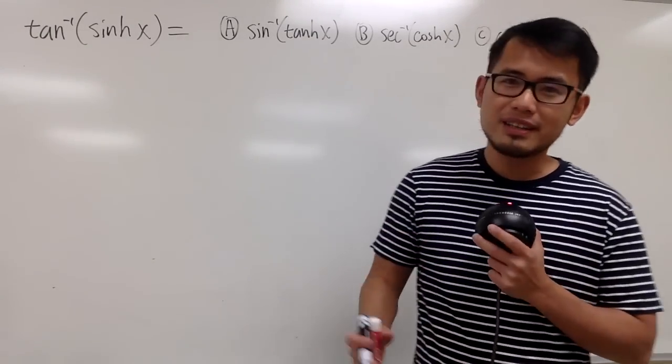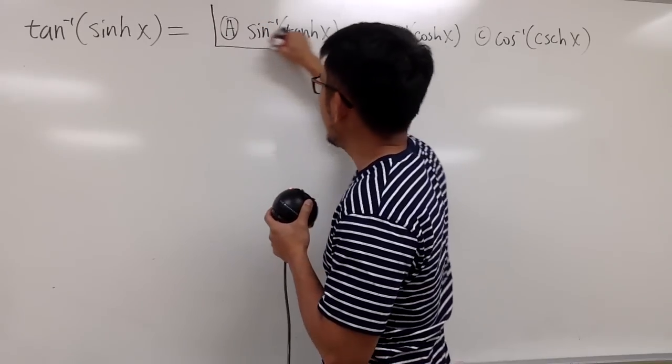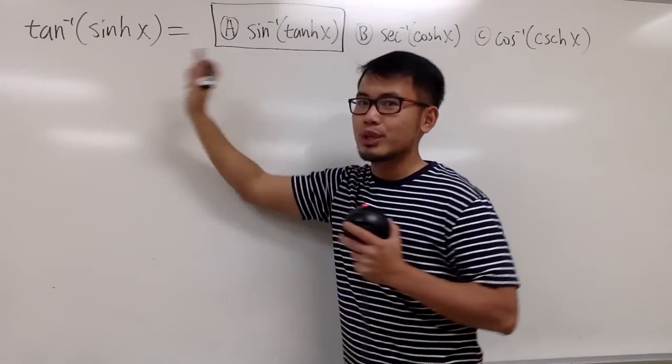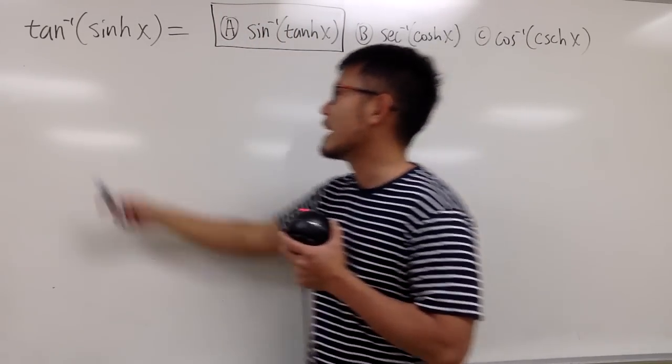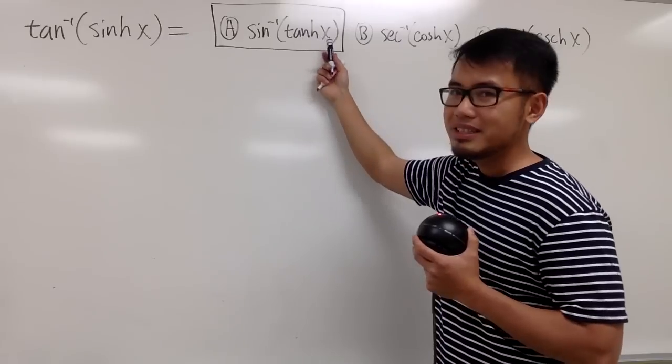Okay, hopefully you guys all have a chance to try this. And let me tell you guys that the answer to this is A. And you see, this is actually really pretty. Because you see that we have the inverse tangent outside, but this is the hyperbolic tangent inside.